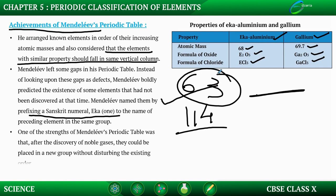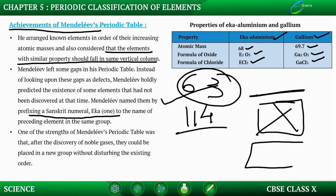Another strength of Mendeleev's periodic table was its accommodation of noble gases after their discovery. Noble gases have a complete valence shell, unlike all other elements. They could be placed in a new group without disturbing the existing order of the table, which was a significant advantage of Mendeleev's classification.